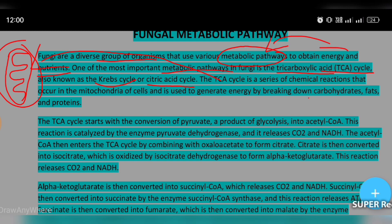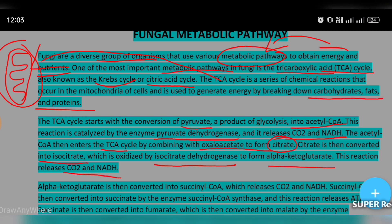The citrate is then converted to isocitrate. Isocitrate dehydrogenase helps convert isocitrate to alpha-ketoglutarate, releasing CO2 and NADH in the process.